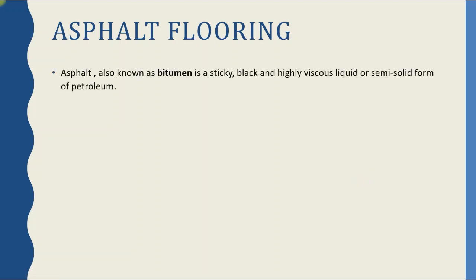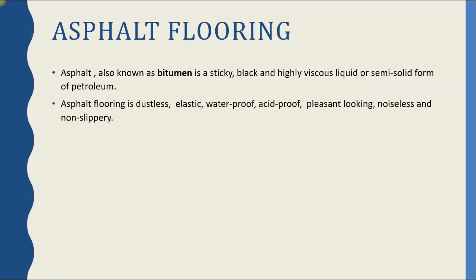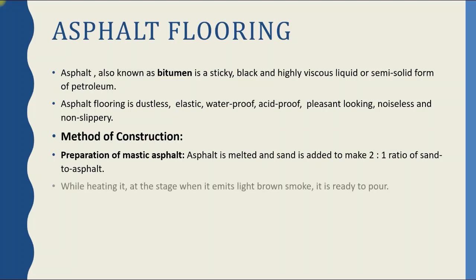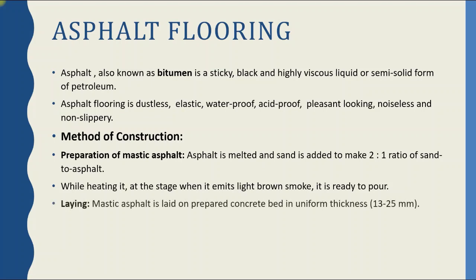Next is asphalt flooring. Asphalt, also known as bitumen, is a sticky black and highly viscous liquid or semi-solid form of petroleum. Asphalt flooring is dustless, elastic, waterproof, acid-proof, gives a pleasant look, is noiseless and non-slippery. For construction: mastic asphalt is prepared by melting asphalt and adding sand in a 2:1 ratio of sand to asphalt while heating until it emits light brown smoke. Mastic asphalt is then laid on a prepared cement concrete bed in uniform thickness of 13–25 mm. Before it becomes hard, sand is sifted over it, a second layer of asphalt is laid, and then it is finished.